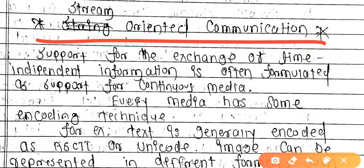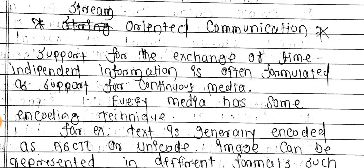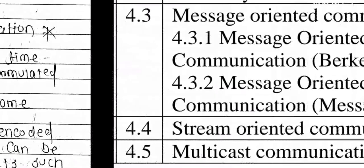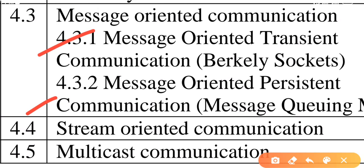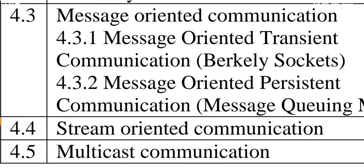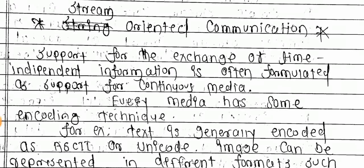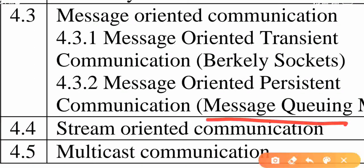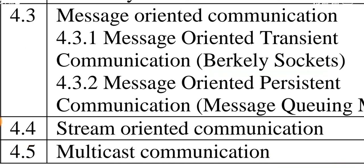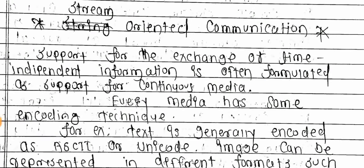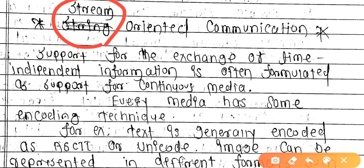What is meant by stream? Stream is nothing but a sequence. In message-oriented communication — transient or persistent — stream-oriented communication is a different model. Stream means a type of sequence. Stream-oriented communication means enabling communication in a sequential manner, one by one.